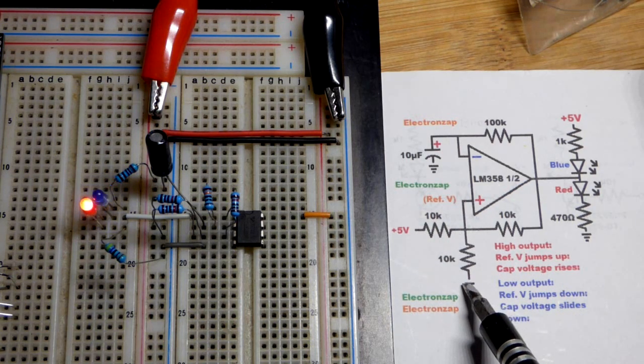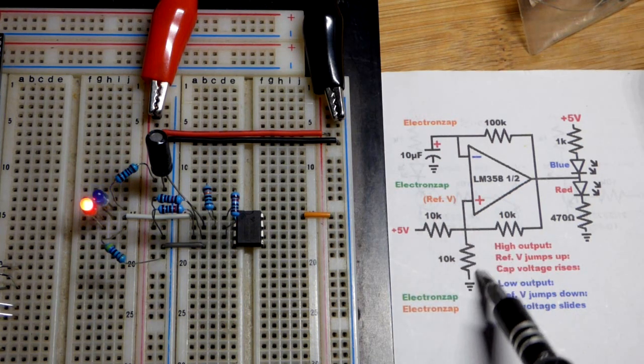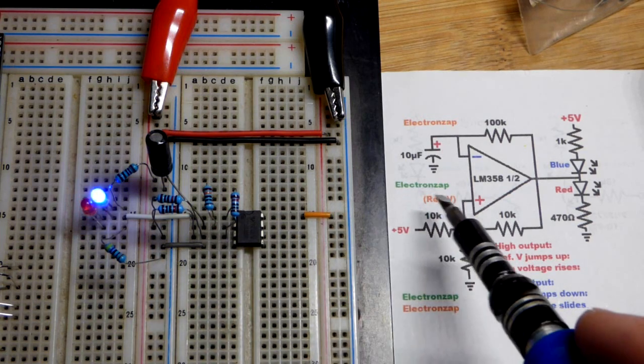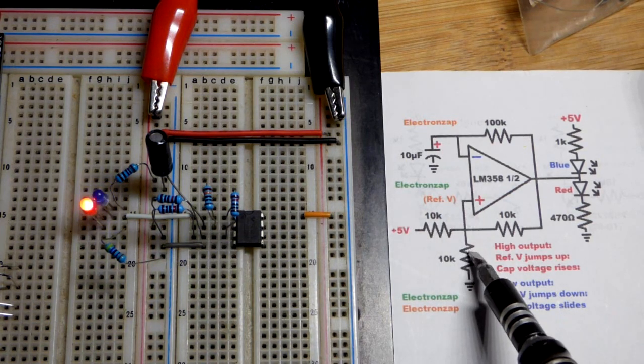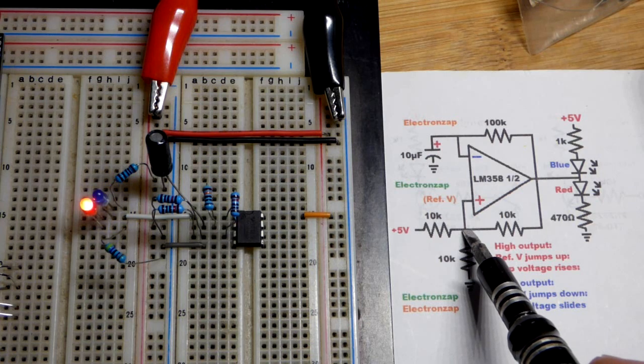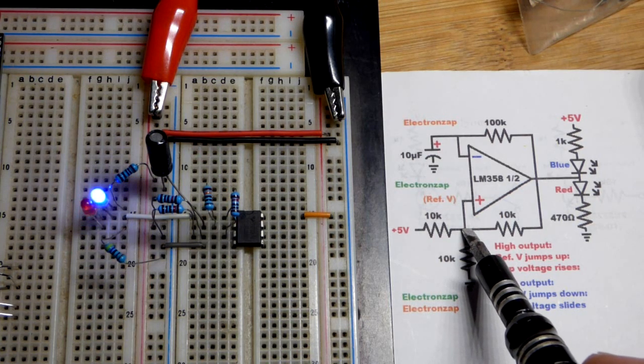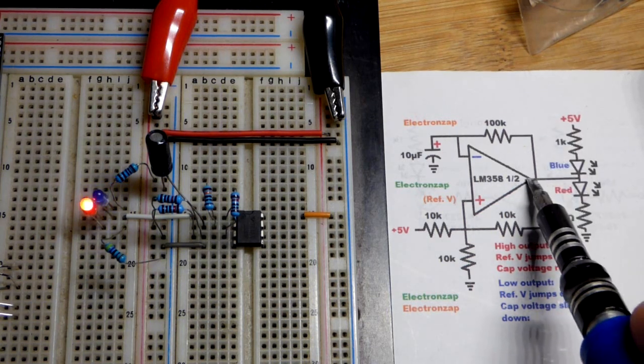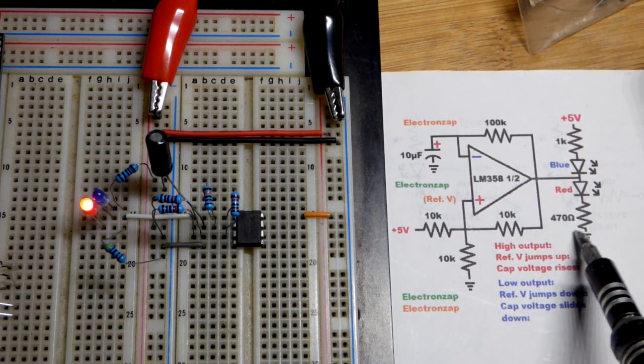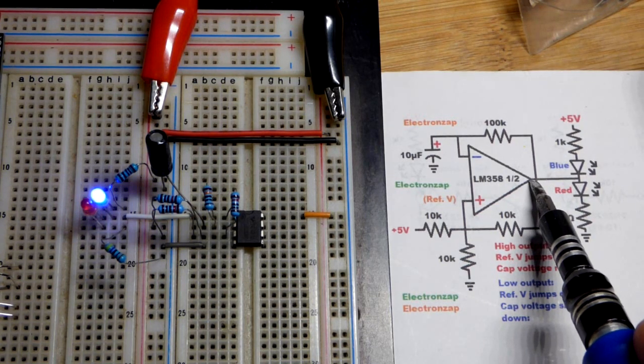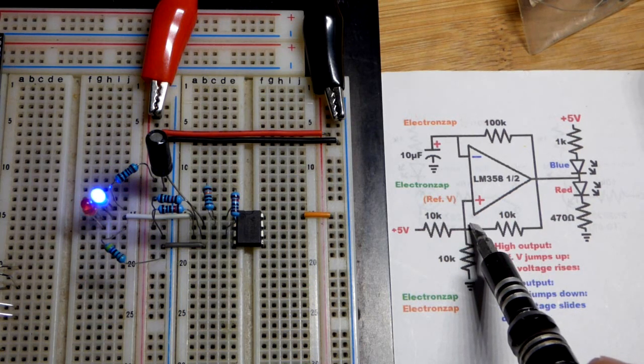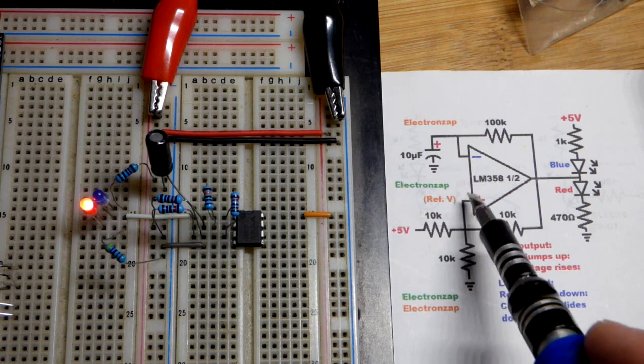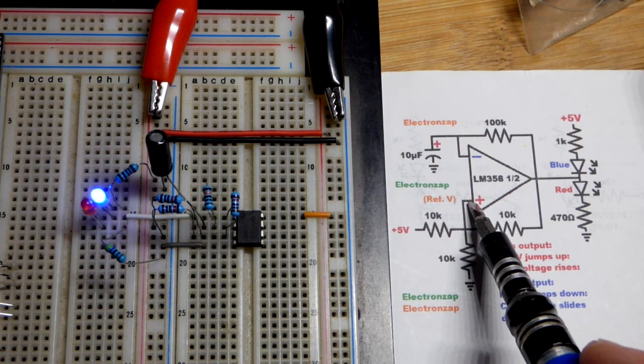So we have two equal value resistors across the supply rails there going to the non-inverting input. So these two resistors are trying to set it to half of the supply voltage, 2.5 volts. But the output is either high, as positive as it can go, or low, as negative as it can go. And there's a resistor coming back right here. And so when the output is high, that raises the voltage at the non-inverting input.